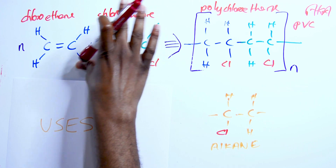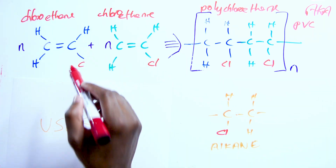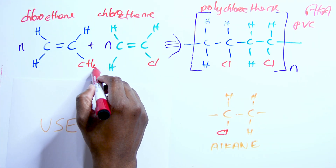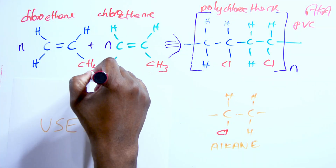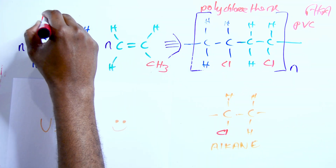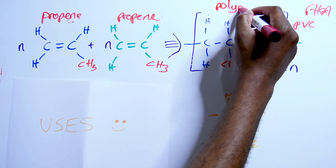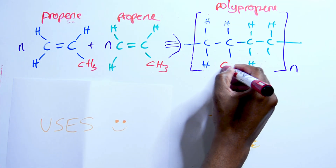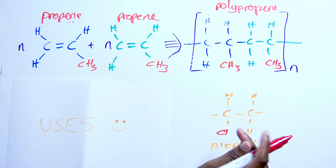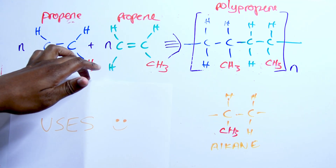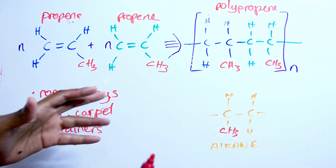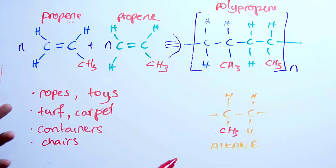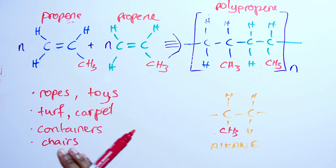We can do a similar setup for polypropene. So we want to make propene — we have two carbons already, so let's add another carbon: one, two, three — propene, three carbons, and we fix up the H's with CH3. This is propene, and of course we're going to call this polypropene, with CH3 groups shown — still the alkane type linkage. Uses include ropes, toys, artificial turf, carpet, food containers, and plastic chairs.